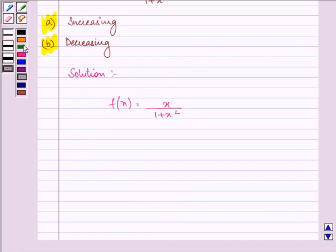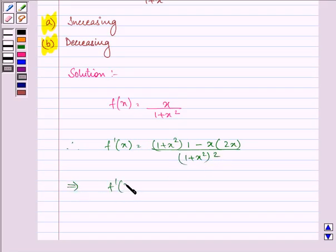Now, let us find out the derivative of this function. The derivative on applying quotient rule will be 1 plus x square into derivative of numerator minus x into derivative of the denominator upon denominator's whole square. That further implies that we have f dash x equal to 1 plus x square minus 2x square upon 1 plus x square the whole square.